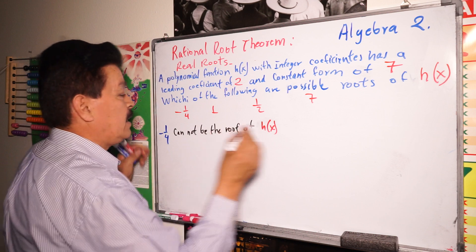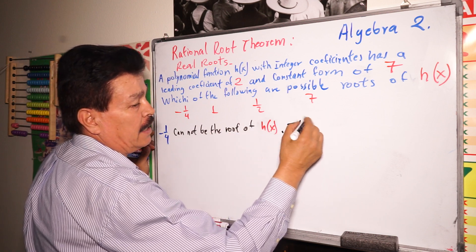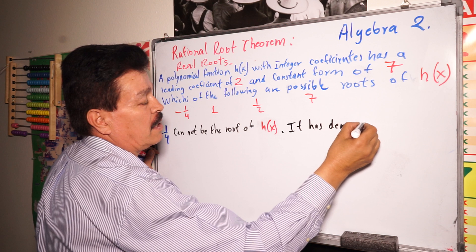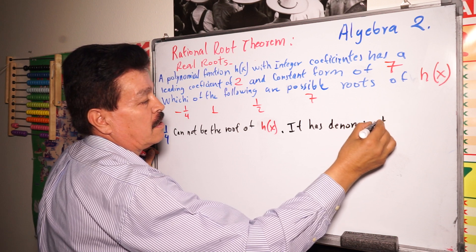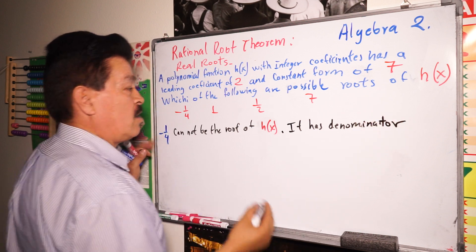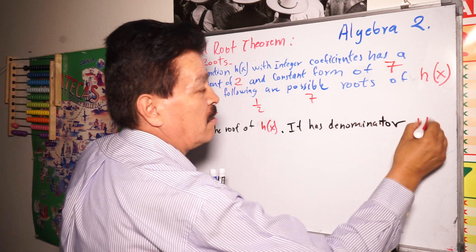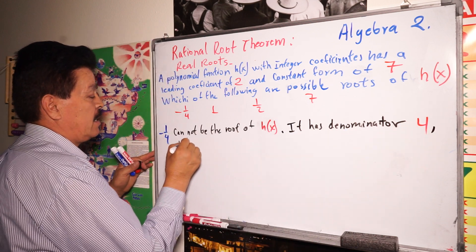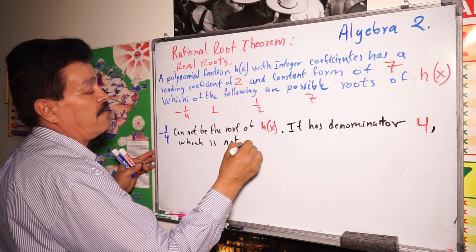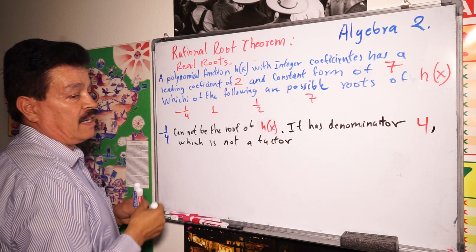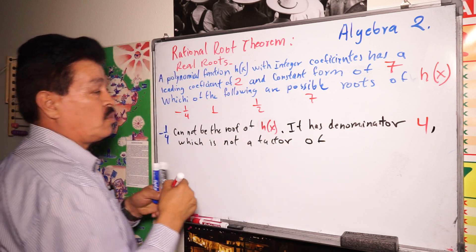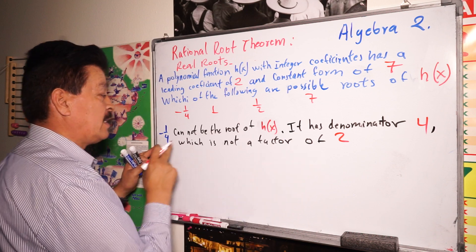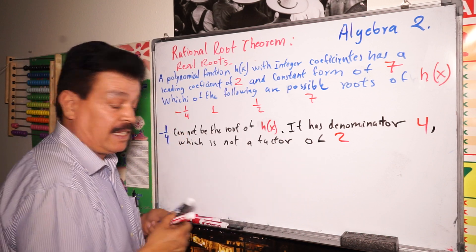Why? Because it has a denominator of 4, which is not a factor of 2. The leading coefficient is 2, and 4 is not a factor of 2. That's why this number cannot be the root of h(x).